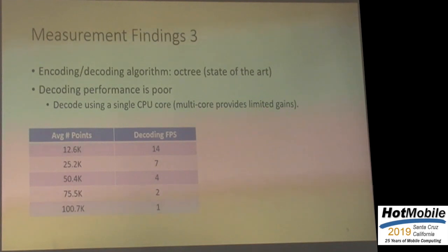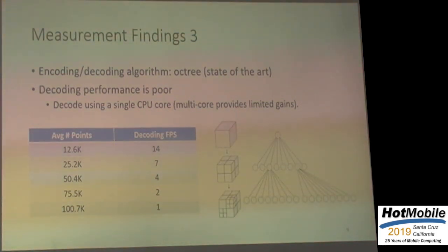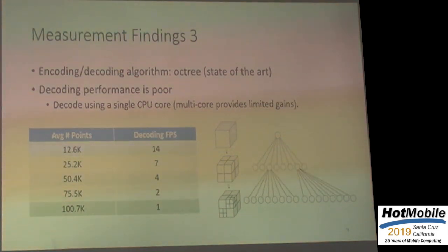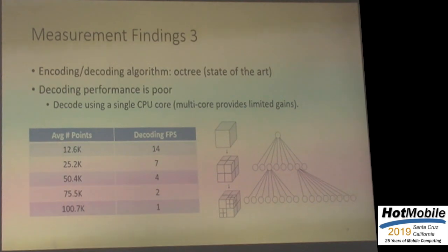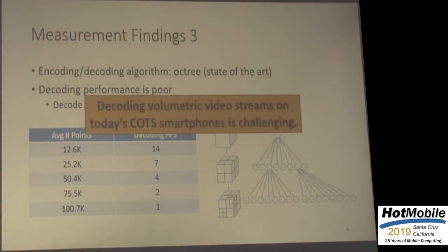A natural idea is to do encoding and decoding. The state-of-the-art encoding and decoding algorithm for point cloud is called Octree — a data structure that recursively divides three-dimensional space into sub-regions, where each node has exactly eight children. But looking at the table showing decoding performance using a single CPU core on the smartphone, performance is pretty bad. We also have multi-core results in the paper, but they provide very limited gains. The key message is that decoding volumetric video streams on today's smartphones is really challenging.